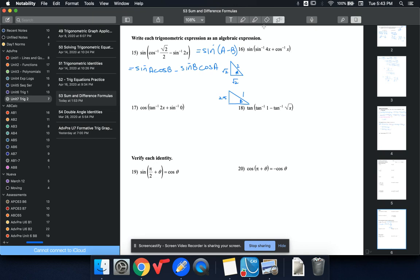That would then tell me that my adjacent side by Pythagorean theorem is gonna be square root of 1 minus 4x squared.